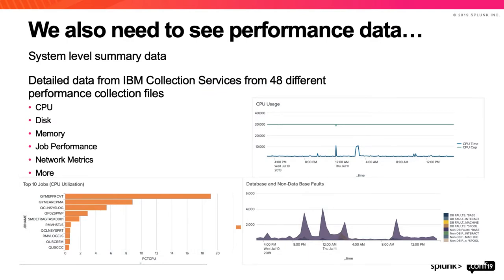For performance data, the agent has a built-in capability to get system-level performance data and feed it into Splunk. In our latest release we've added the ability to get data from IBM I collection services, which many people are running on their IBM I systems. That provides a much more granular, detailed level of data — not only things like CPU, disk, and memory, but also detailed data for things like job performance, so you can look at jobs that are using unusual amounts of CPU time.